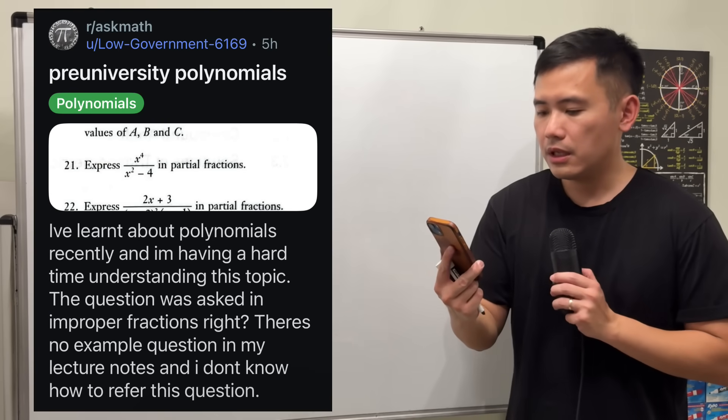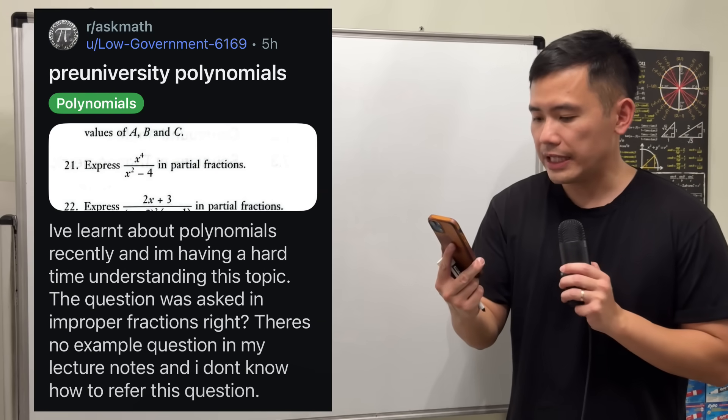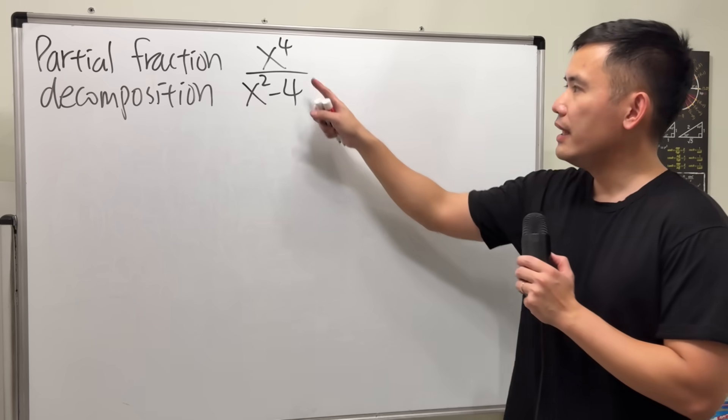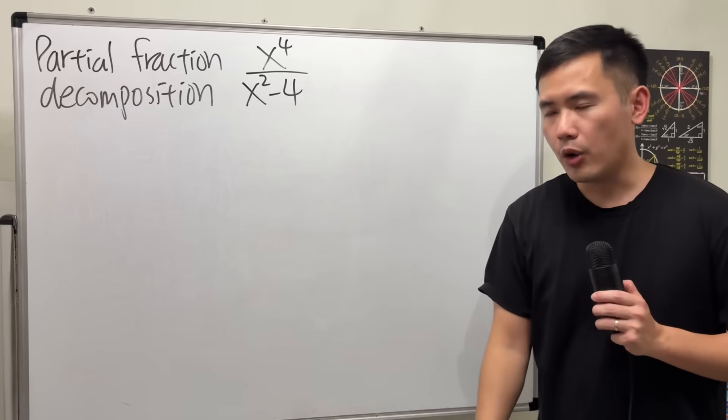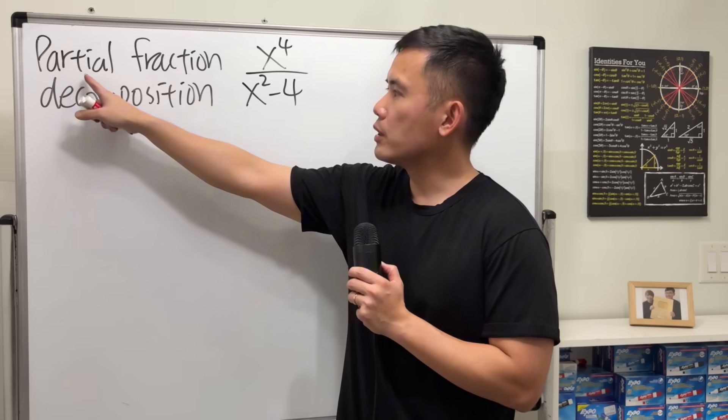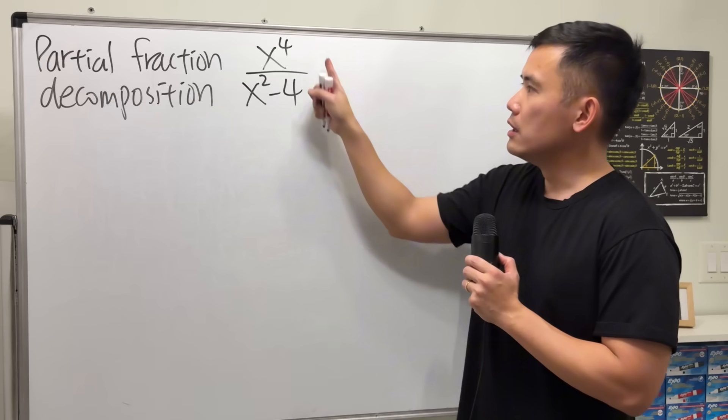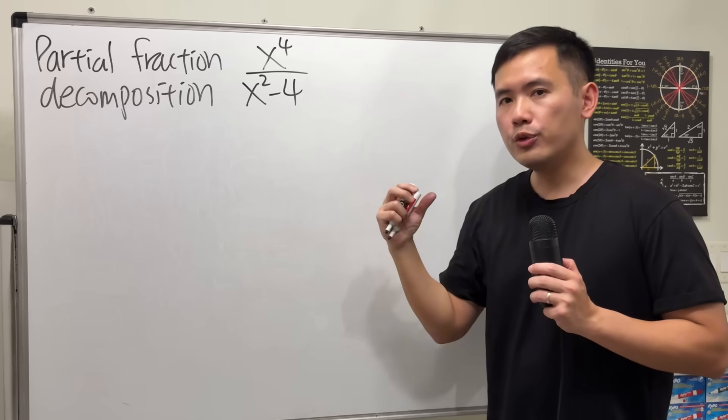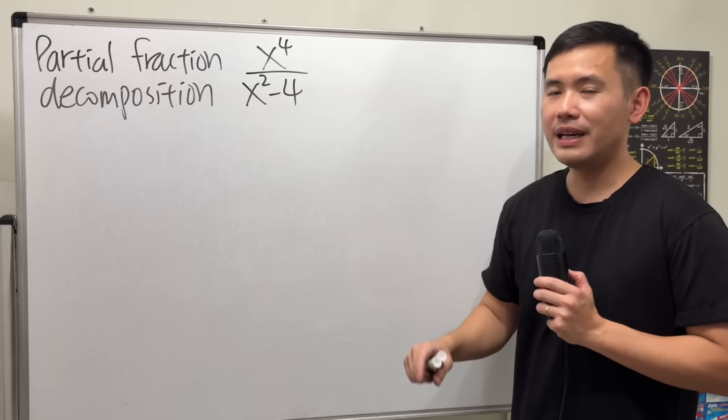Pre-university polynomials. I have learned about polynomials recently, and I'm having a hard time understanding this topic. Okay, let's have a look. Right here we have x to the fourth power over x squared minus four. The goal is to perform what we call the partial fraction decomposition. That means, you see we have one algebraic fraction. We are going to break it down into the sum of smaller fractions. And let me show you how to do that.